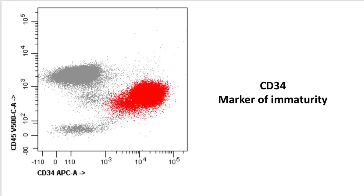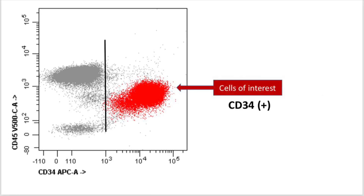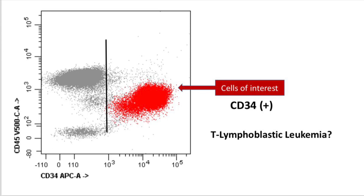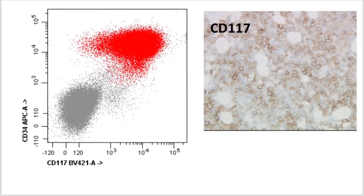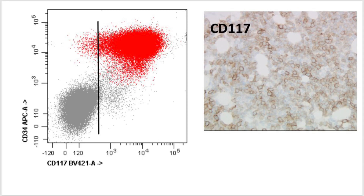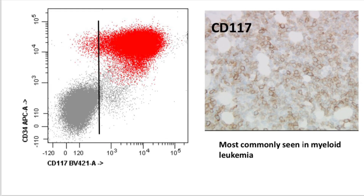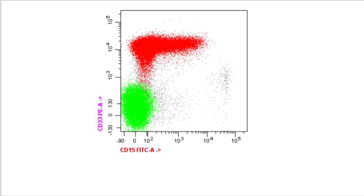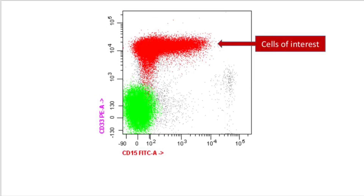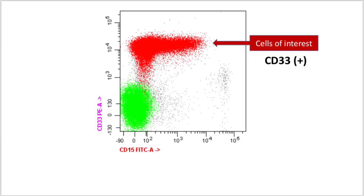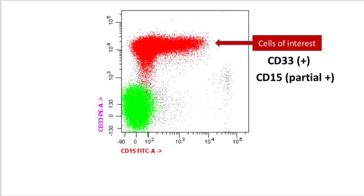CD34, another marker of immaturity, is clearly positive on our population of interest, suggesting this is most likely a T-lymphoblastic leukemia. Further marker analysis shows CD117 is also positive — a marker of immaturity typically seen in myeloid leukemias, present on myeloblasts and promyelocytes. Notably, the flow cytometry plot shows the population of interest is nicely positive for CD33, a myeloid marker, and partially positive for CD15, another myeloid marker.